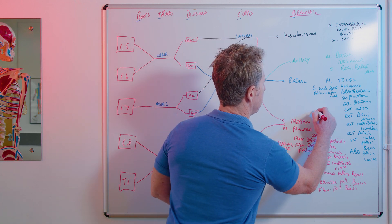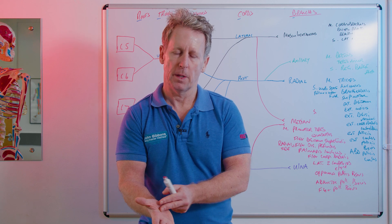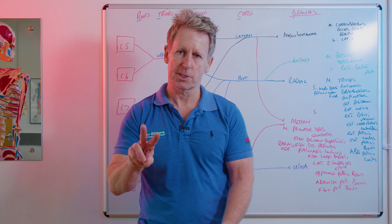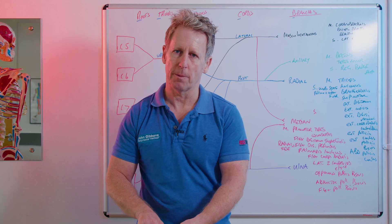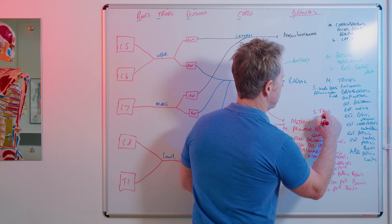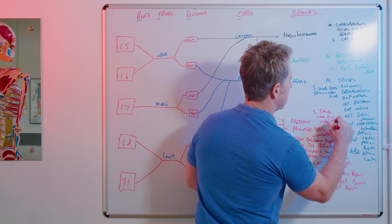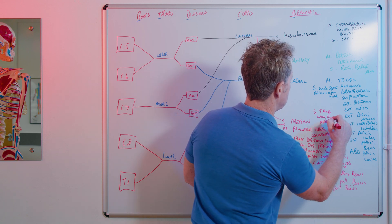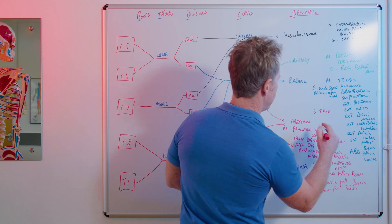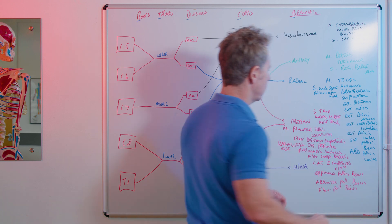The sensory supply of the median nerve — many people will know this one — is the thumb, index, middle, and half the ring finger. It supplies the lateral two thirds of the hand, including the tips of the second and third digits.